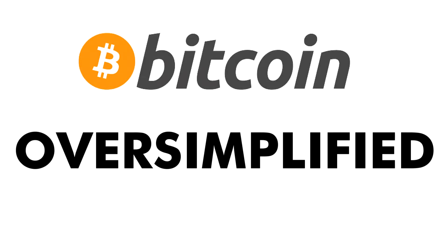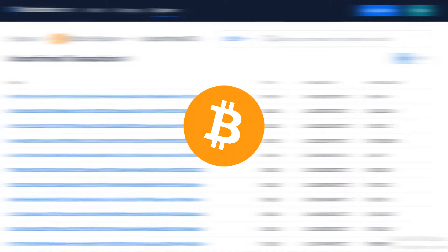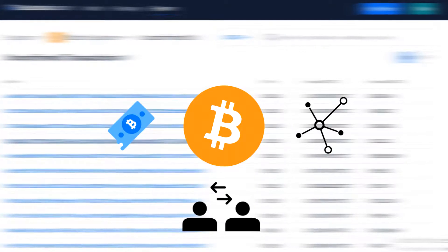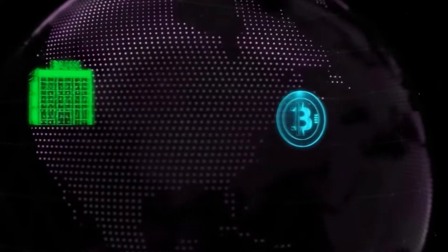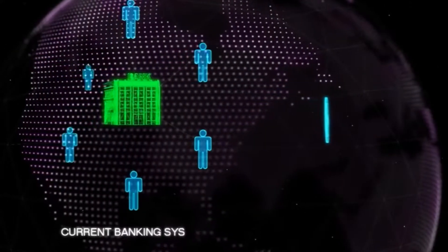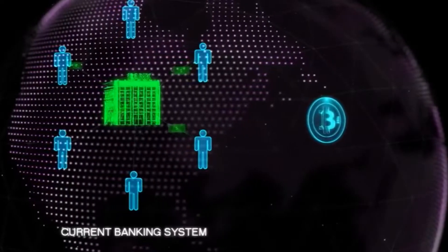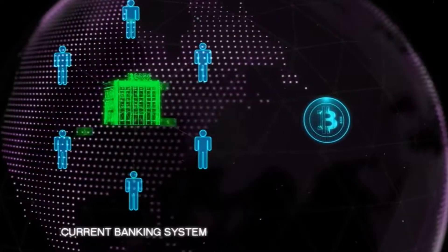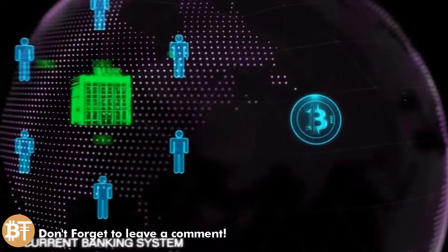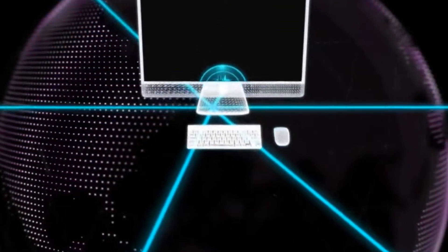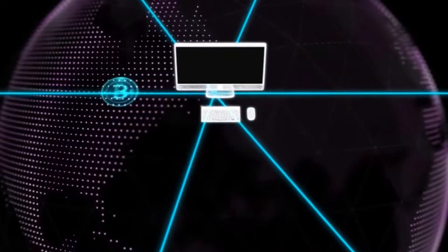Bitcoin oversimplified, brought to you by Bit Truth. Bitcoin is a decentralized peer-to-peer electronic cash system. Bitcoins are not controlled by any one entity or central bank, and allow users to send and receive them as a form of payment without the use of a third party.